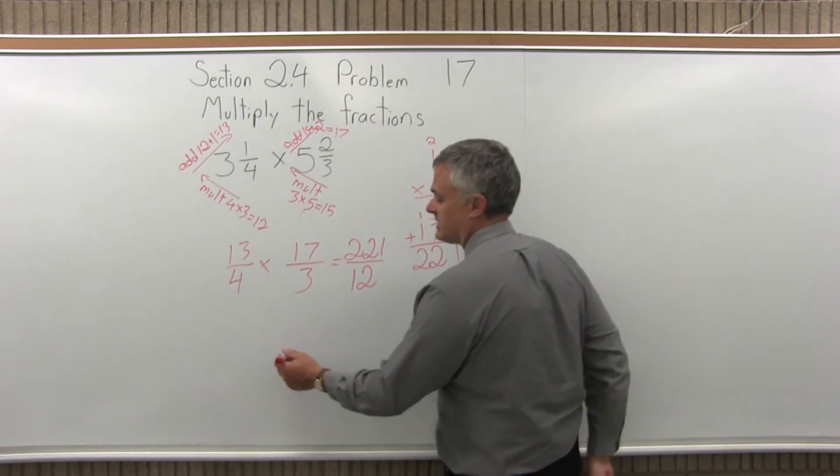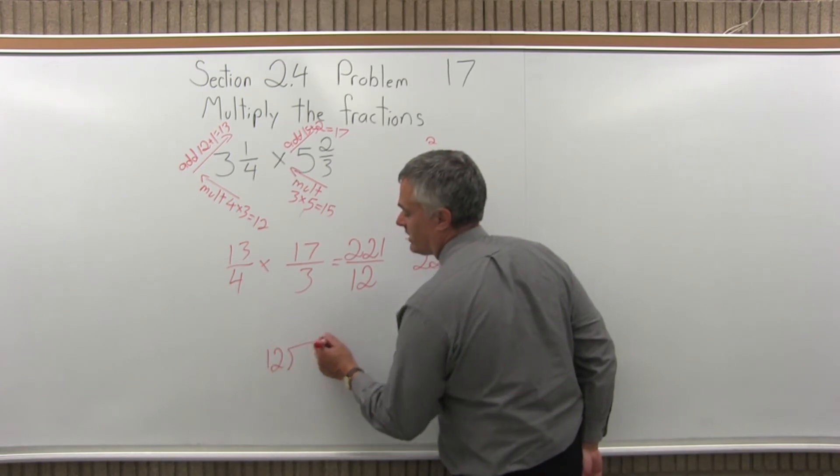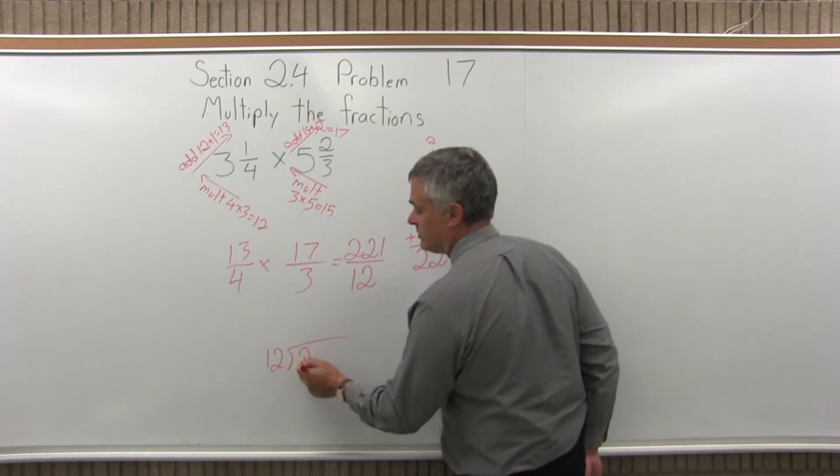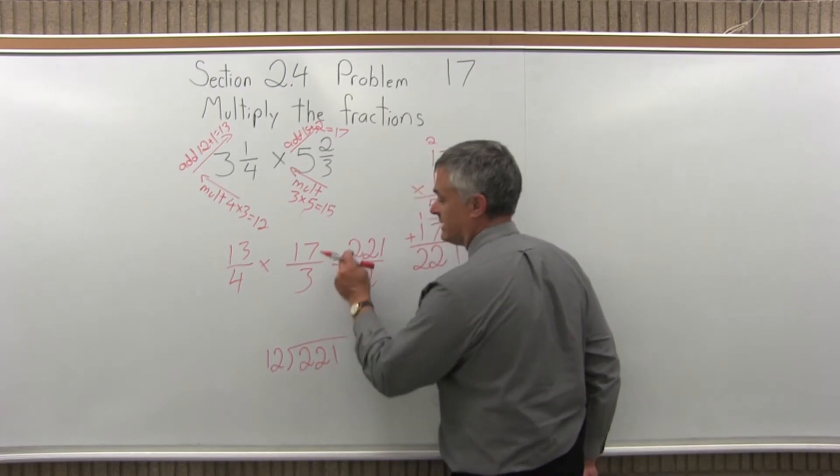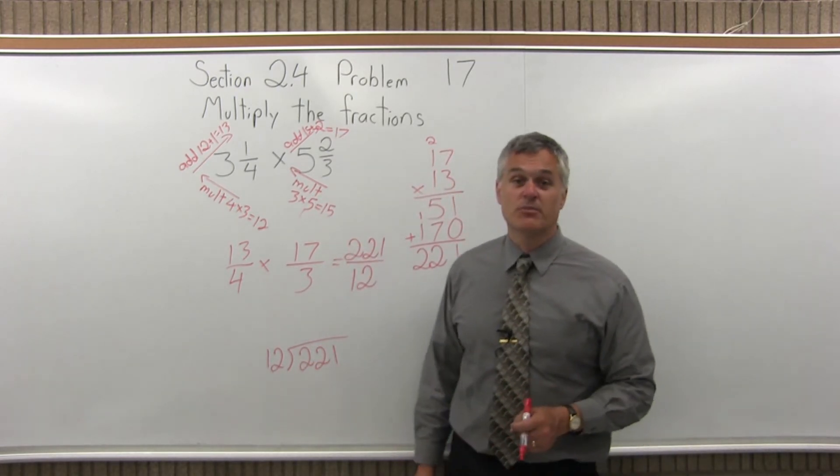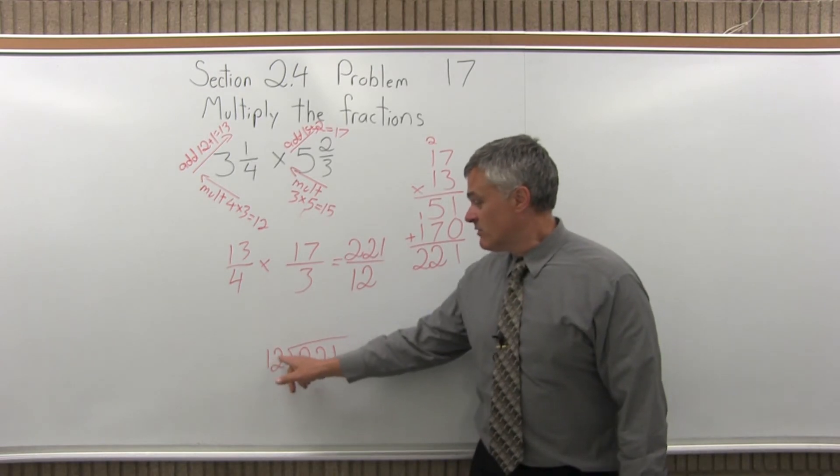So what you do is you go off to the side, and you will divide the denominator, whatever it is, in this case it's 12, into the numerator, whatever that is. In this case it's 221. And see what type of fraction you get. So, 12 goes into 2, won't fit.